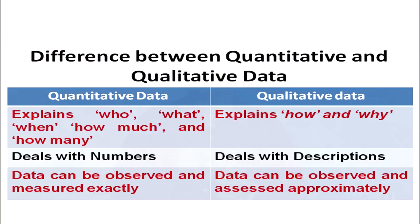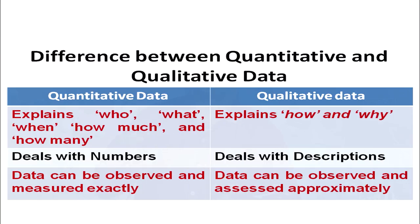Now what is the difference between quantitative and qualitative data? Quantitative data explains who, what, when, how much, and how many — for example, how much marks has been obtained, how many persons were there. This is quantitative data. Whereas qualitative data explains how and why — for example, why a student is lagging in mathematics. Observation and interaction with parents can tell you about that student's problems. Those opinions given by parents, peers, or colleagues will be qualitative data.